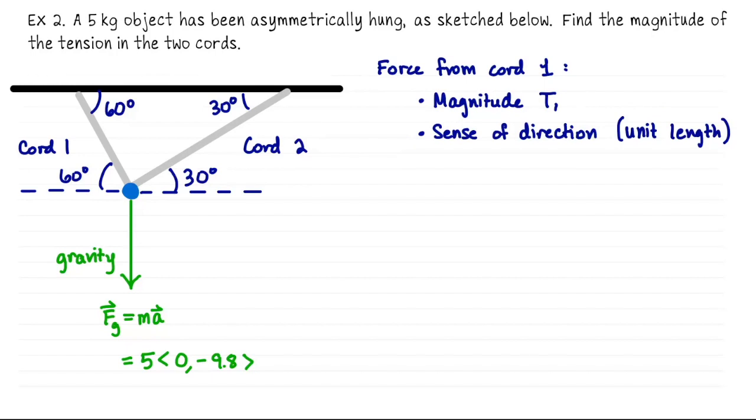Now with these angle problems, your unit length vector is going to come from sines and cosines. So in particular, if my object is at the origin, then this dashed line to the right is like the positive x-axis. So over here, this is like the negative x-axis. So what angle is this cord making with the positive x-axis? Well, it's making an angle of 180 minus 60. It's the supplement of the angle 60 degrees. So a unit vector that points in this direction would be cos 120 sine 120.